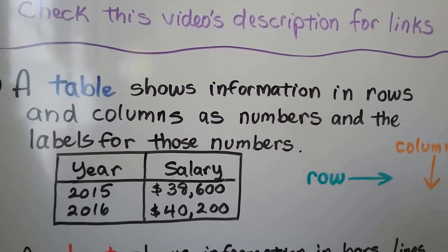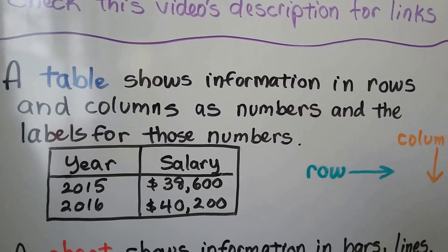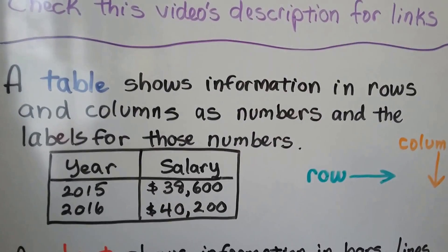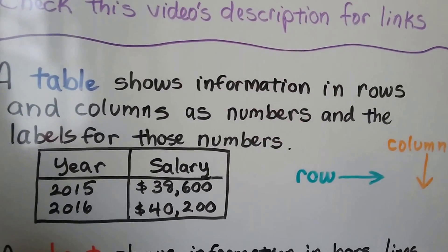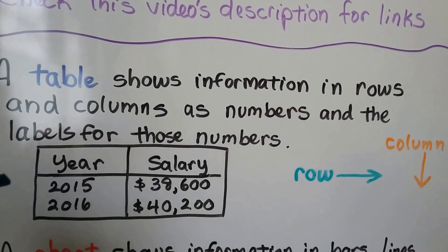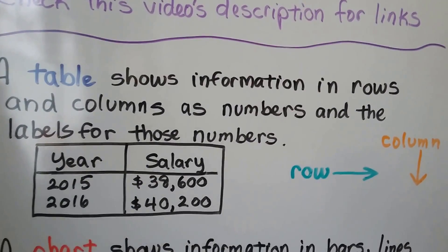A table shows information in rows and columns as numbers, and there are labels for those numbers. Here we've got a table that shows a column of years and a column of salaries, and when we look at the row going across, we can see what they made for that year, what their salary was. That's a table.